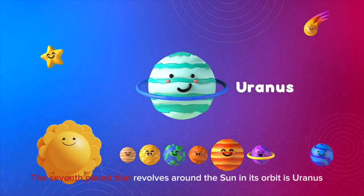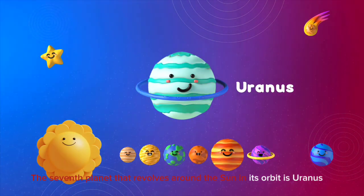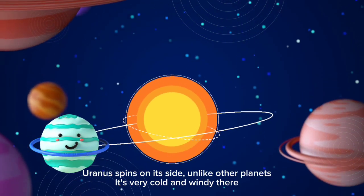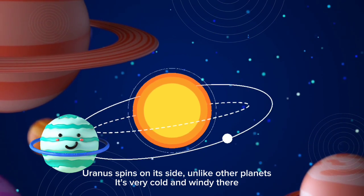The seventh planet that revolves around the sun in its orbit is Uranus. Uranus spins on its side unlike other planets. It's very cold and windy there.